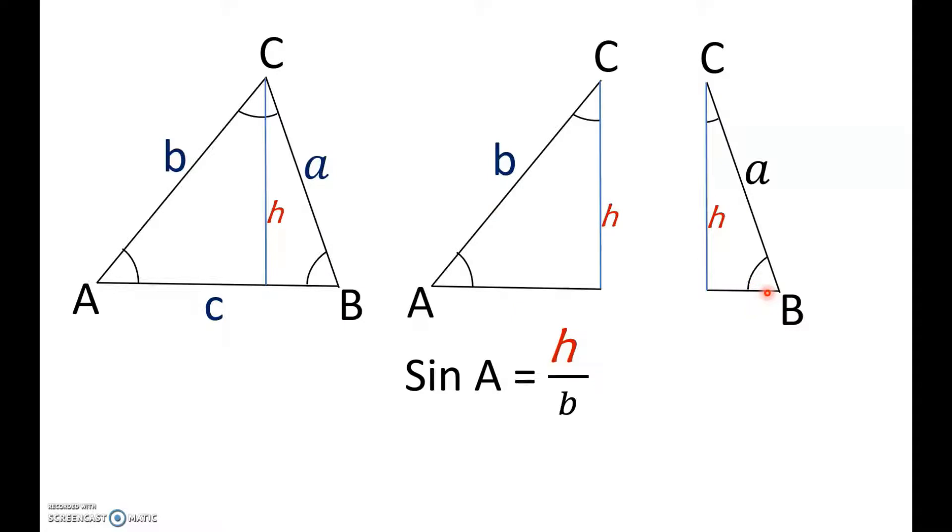Next, let's take this triangle and let's find sine B, which is referring to the angle here. So, sine B would be equal to H divided by A.